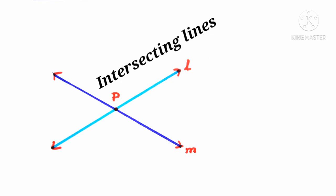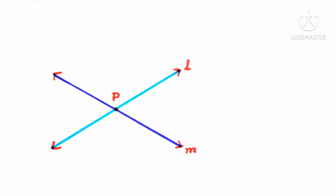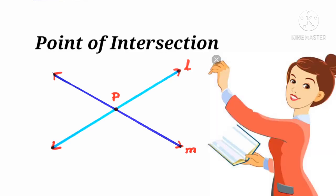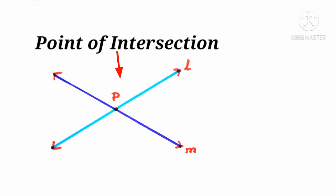The common point where these lines meet is called the point of intersection. Here P is the point of intersection.